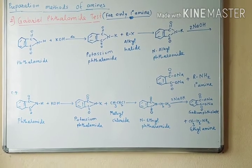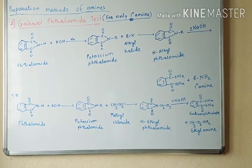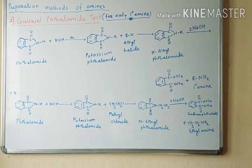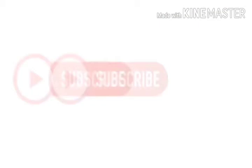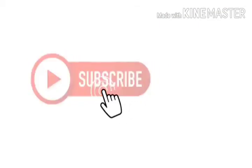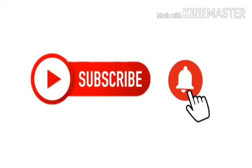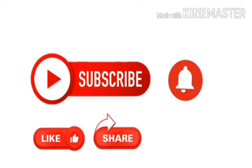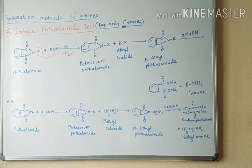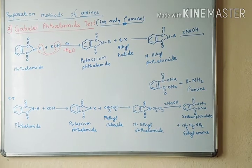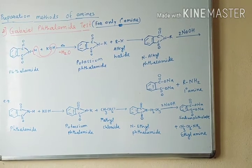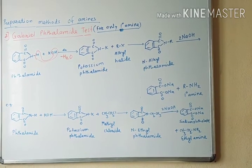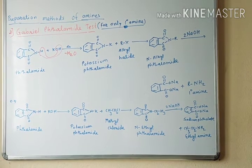A hydrogen atom from the NH attached to the nitrogen and KOH combine to form water. The water molecule is removed to form potassium phthalamide. In the reaction, the hydrogen atom is replaced by potassium, so the compound formed is potassium phthalamide.